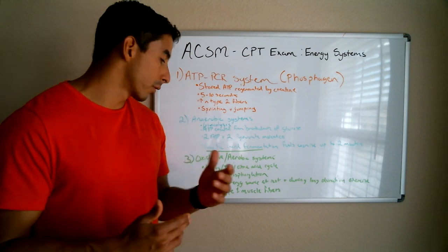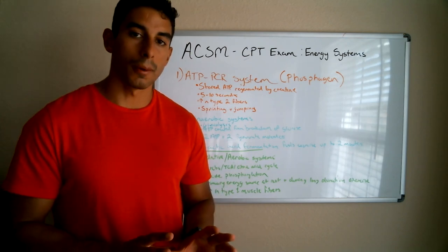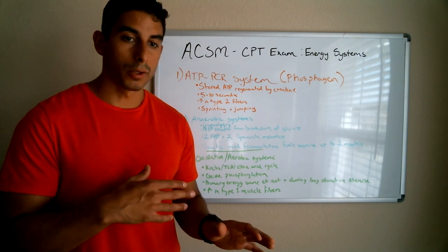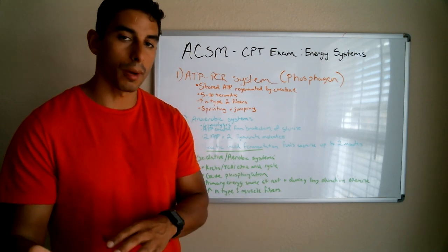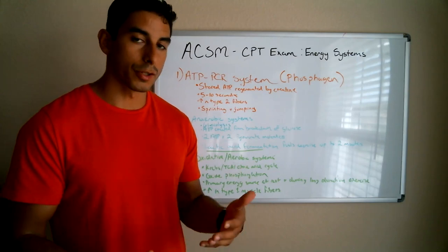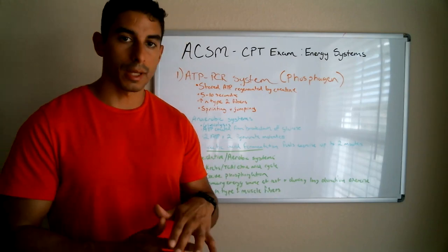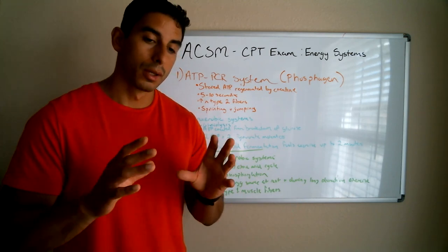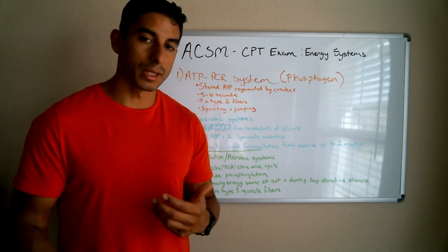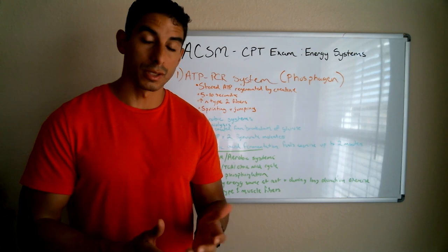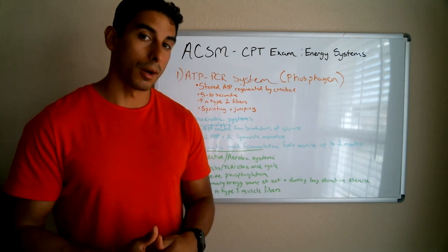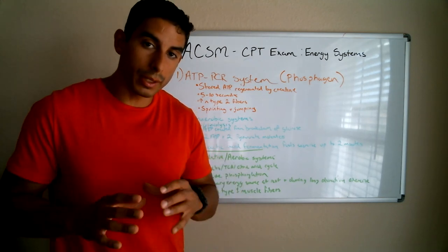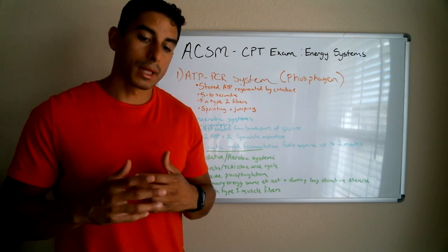You might also see questions about how much ATP is created — for example, if you put two pyruvate into the citric acid cycle, how much ATP is produced? This material is likely to constitute about five to ten percent of your exam, though every exam is different. Some exams go heavy on risk stratification, some on behavior modification. The oxidative systems are most prevalent in type one muscle fibers.